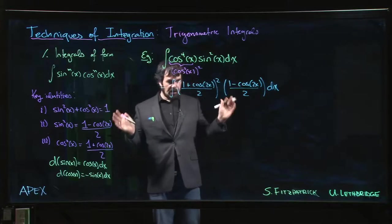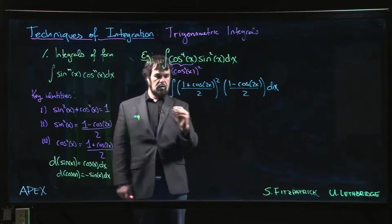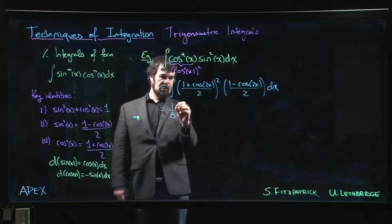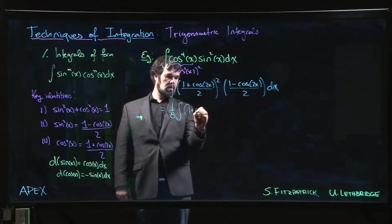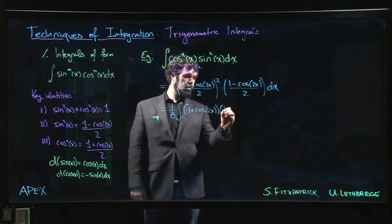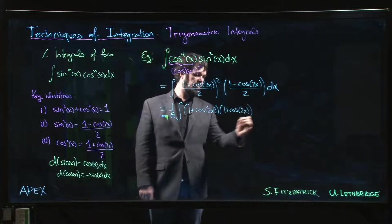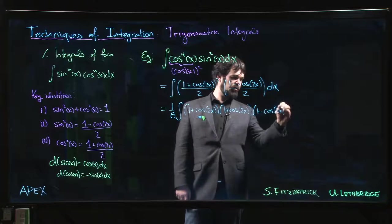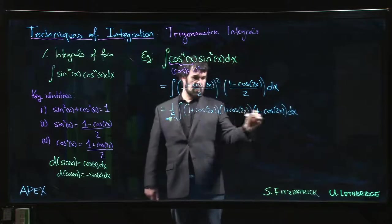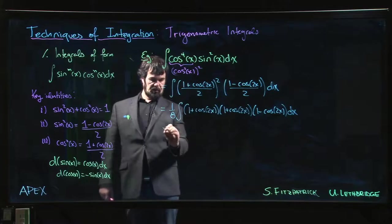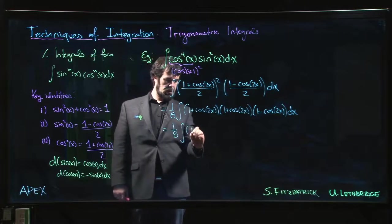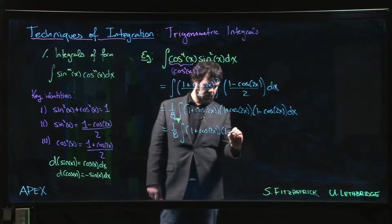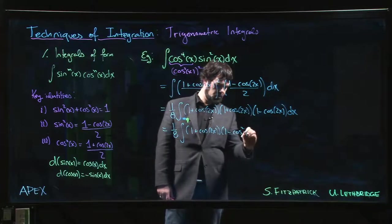And unfortunately there's nothing forward on this but to multiply everything out. There's overall a factor of 8 there that we could bring up front. So we have 1 plus cos 2x times 1 plus cos 2x times 1 minus cos 2x. So I get 1 plus cos 2x times 1 minus cos squared 2x.